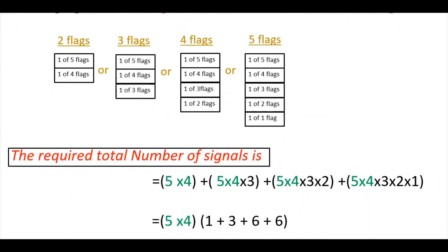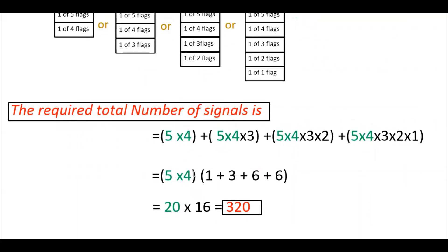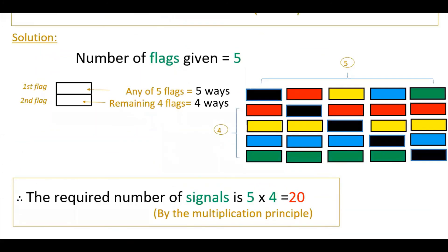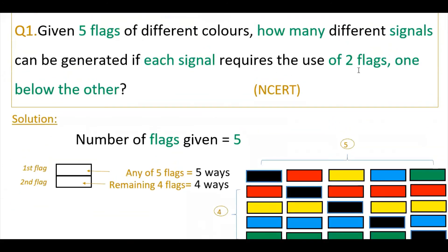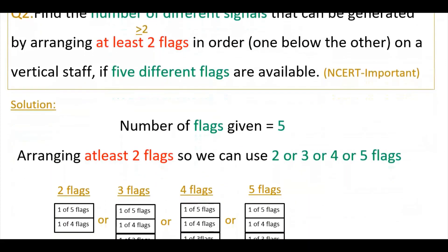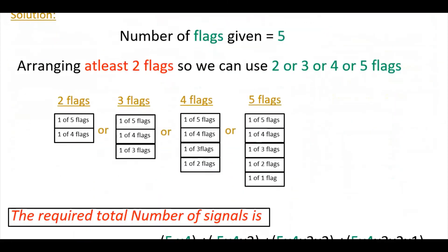Observe that 5 × 4 is common, so factor it out: 5 × 4 × (1 + 3 + 6 + 6) = 20 × 16 = 320. Therefore the required total number of signals is 320. Notice the difference from the previous problem — there the answer was only 20 because each signal required exactly two flags, whereas here each signal requires at least two flags, so the count increases significantly to 320.